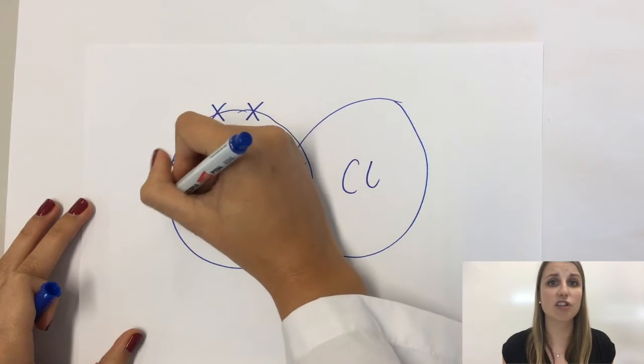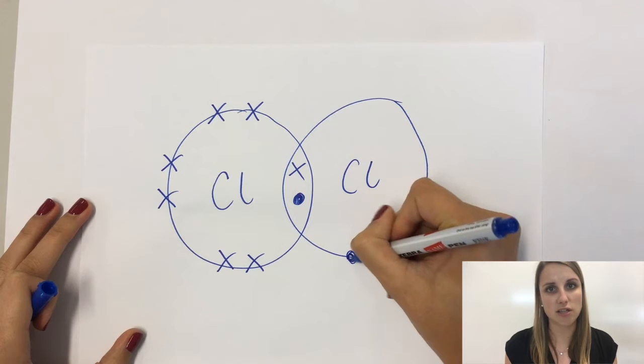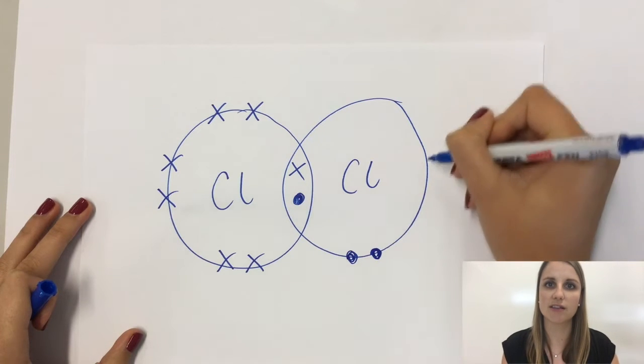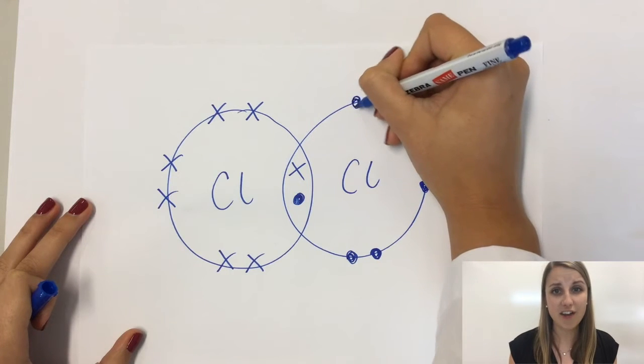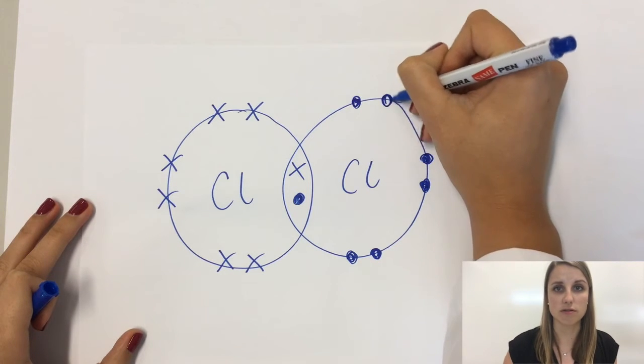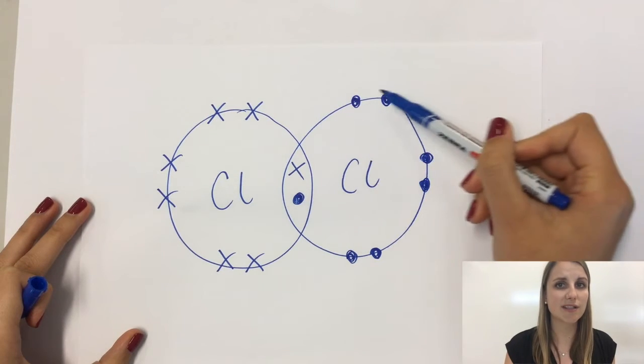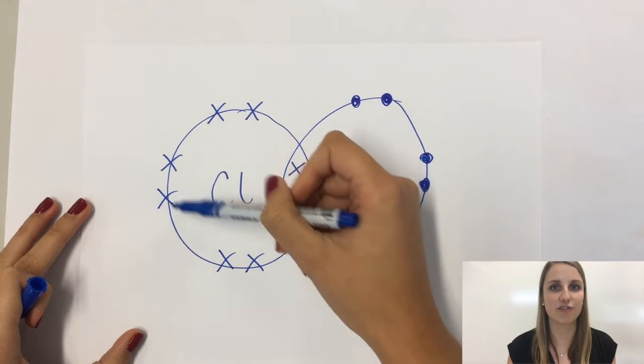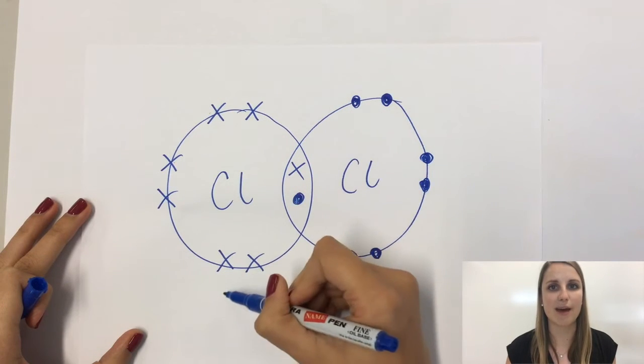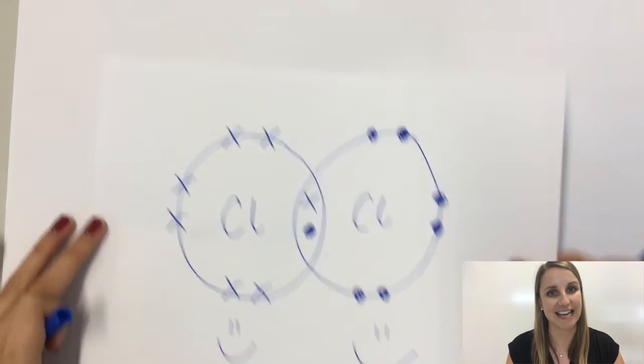Now those outer electrons haven't changed at all. I've still got another six dots around the side and I've still got another six crosses around the side. But now what's special is that if I count how many electrons are in each of these chlorines, including those two in the center that they're now sharing, each of the two chlorines now has a full outer shell. Each of them has eight, which means that this is now a perfectly drawn dot and cross diagram for Cl2.